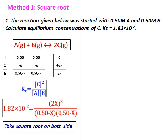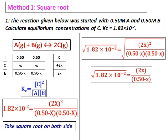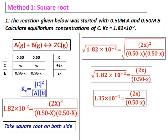Don't immediately start applying the quadratic equation — observe the numbers. This is the best example for taking the square root on both sides. When you take the square root on both sides, the whole solution follows and the value of x can be calculated. They have asked for the value of C, and the concentration of C is twice the value of x.